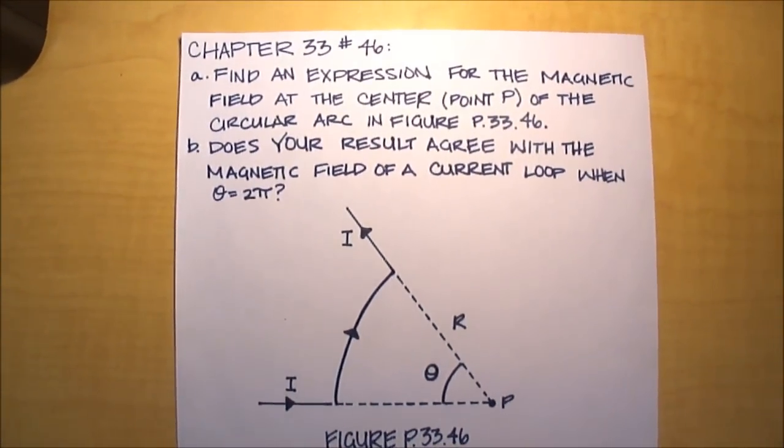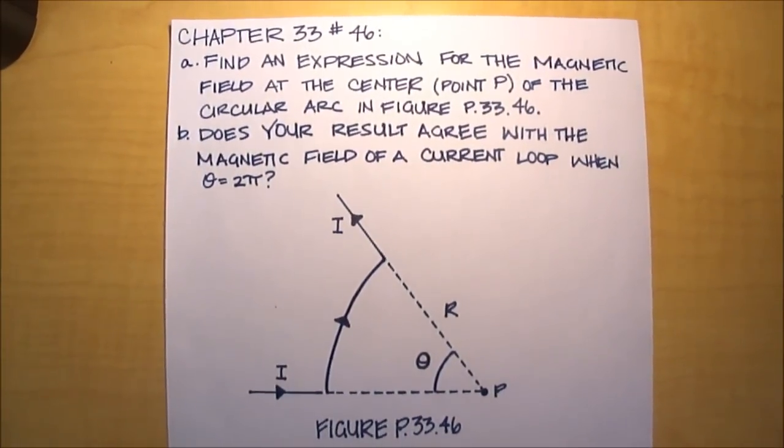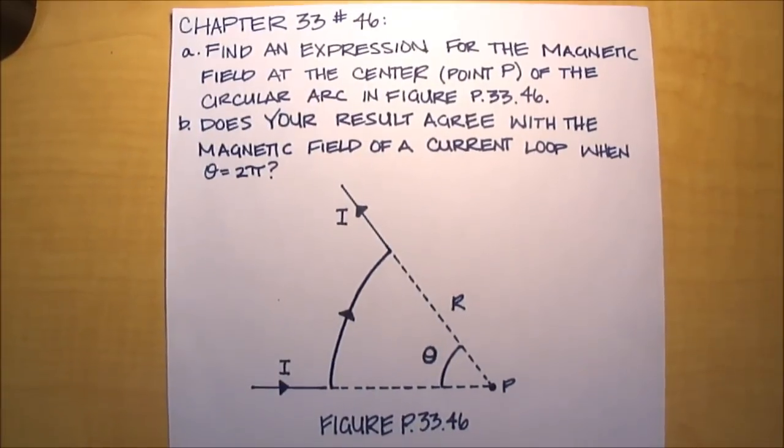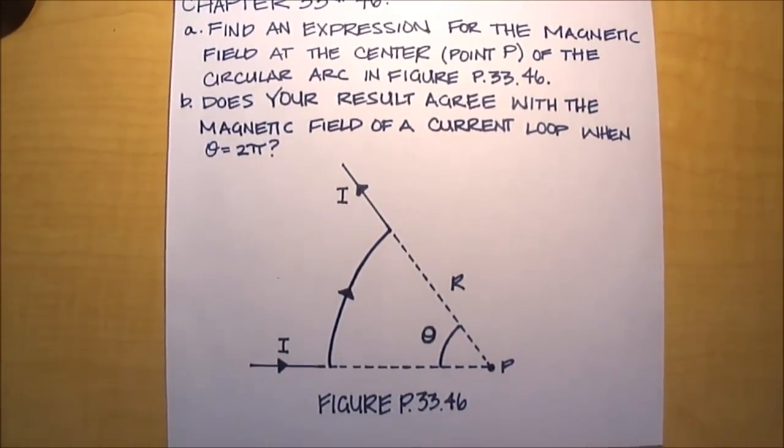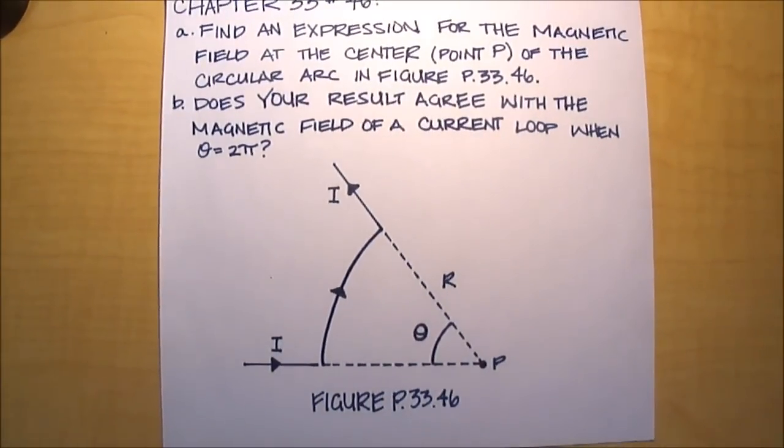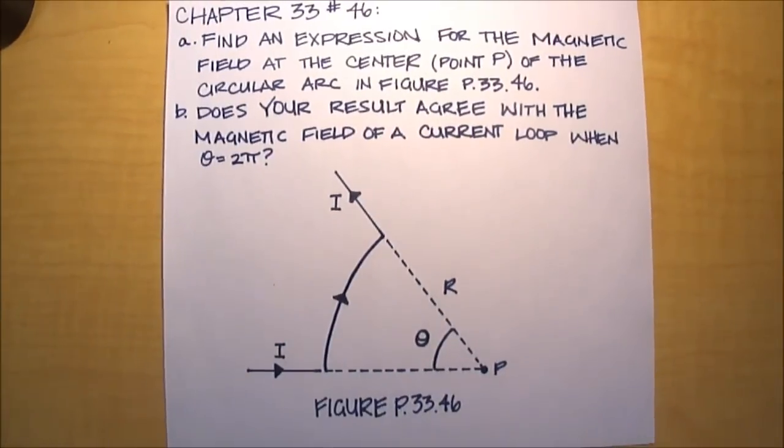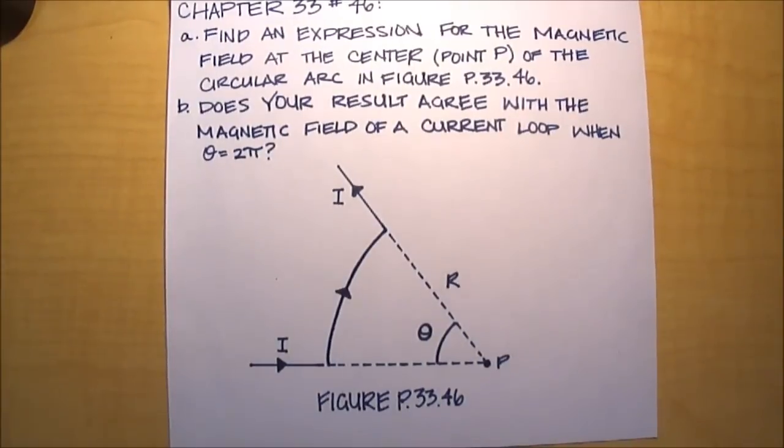Chapter 33, number 46, has two parts. Part A asks: find an expression for the magnetic field at the center, point P, of the circular arc in the figure. Part B asks: does your result agree with the magnetic field of a current loop when theta equals 2π?